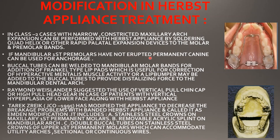The second modification: if the mandibular first premolars have not erupted, the permanent canines can be used for anchorage. The third modification: a buccal tube can be welded to the mandibular molar band for the addition of Frankel-type lip pads, which is useful for correction of hyperactive mentalis muscle activity, or a lip bumper may be added to the buccal tubes to provide distalization forces to the mandibular lateral arch.